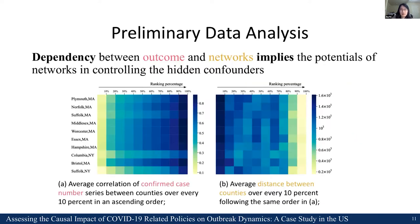To explore whether the proxies have the potential to capture the unobserved confounders, we conduct preliminary data analysis. We explore the dependencies between the number of confirmed cases and the distance network. We show two heat maps: the left one shows the correlation between the confirmed case number series in different counties, and the second shows the distance between counties. We notice that county pairs with shorter distances are more likely to have higher correlation with respect to confirmed cases.